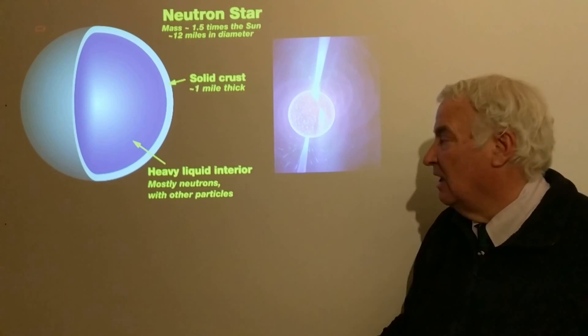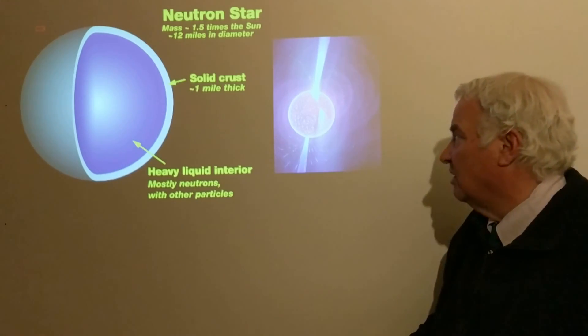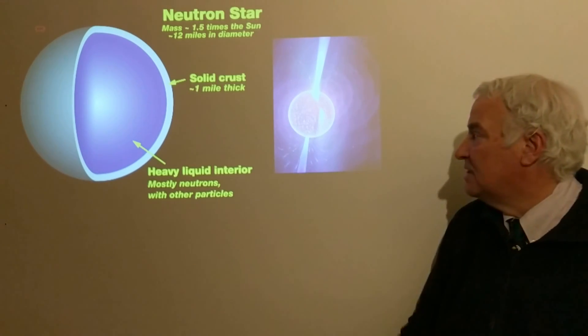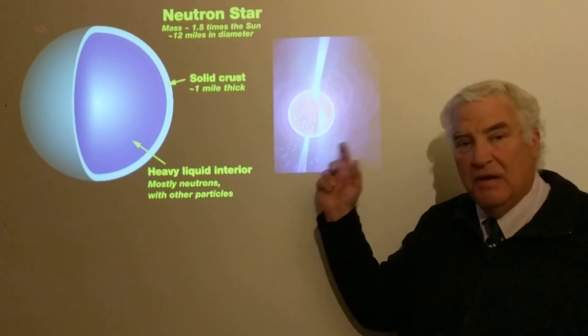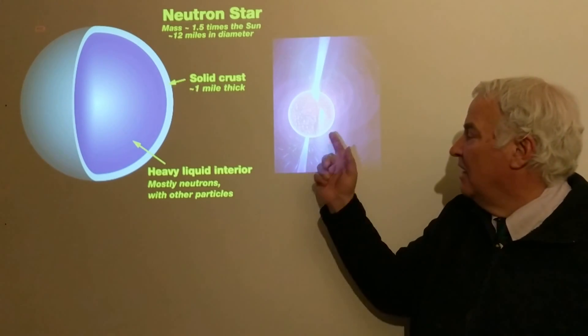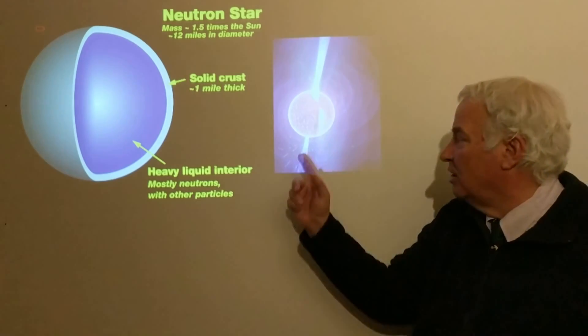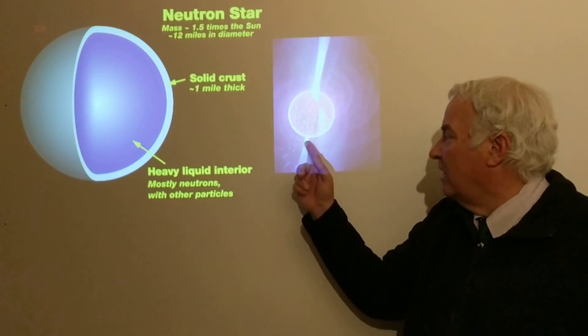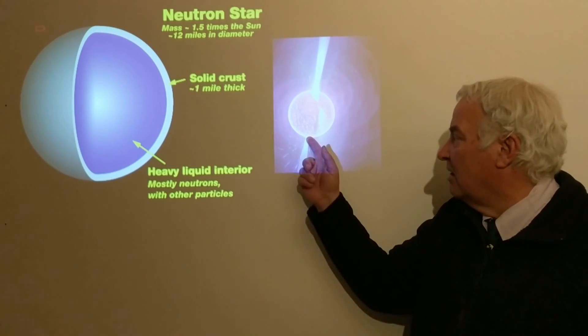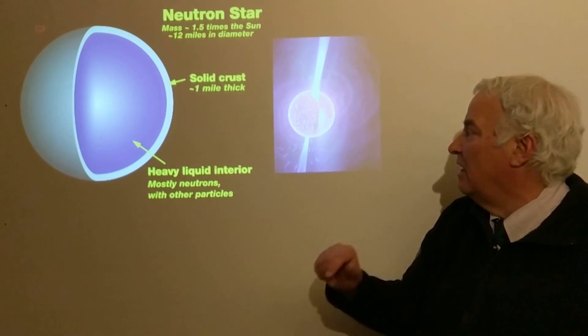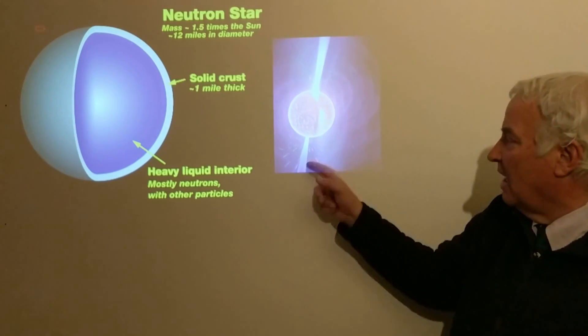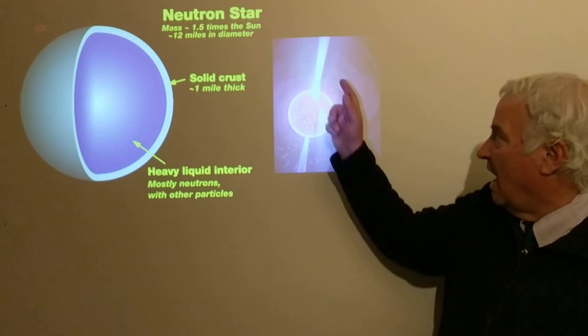After neutron stars are formed, they often become pulsars if they're spinning very rapidly. A beam of radiation, a beam of light, can form out of each of the poles as it's spinning. This is created by an electric field and magnetic fields associated with the spinning star.